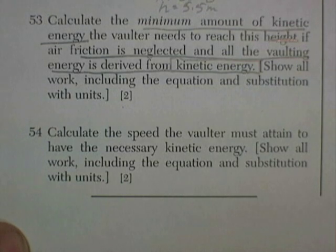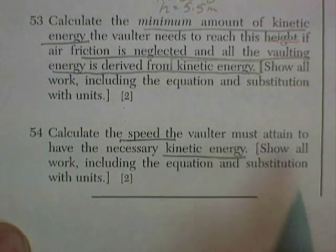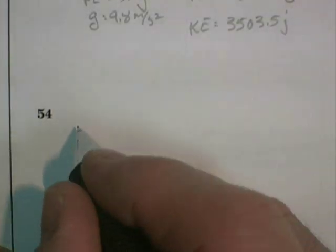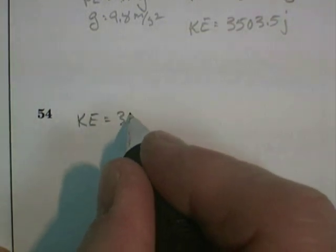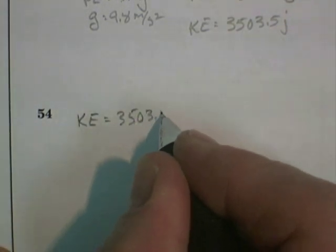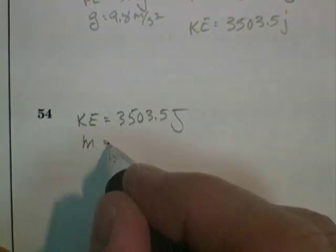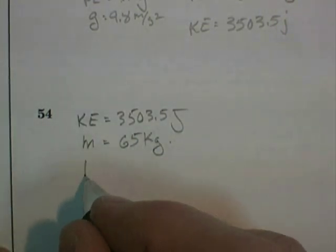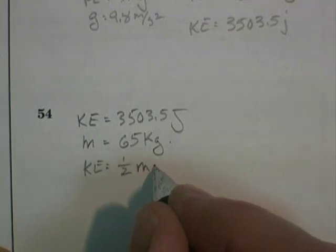Question 54. Calculate the speed the vaulter must obtain to have the necessary kinetic energy. Show all work and substitution with units. Well, the kinetic energy is going to be 3,503.5 joules. The mass of the pole vaulter is 65 kilograms. And the formula for kinetic energy is equal to one-half mv squared.